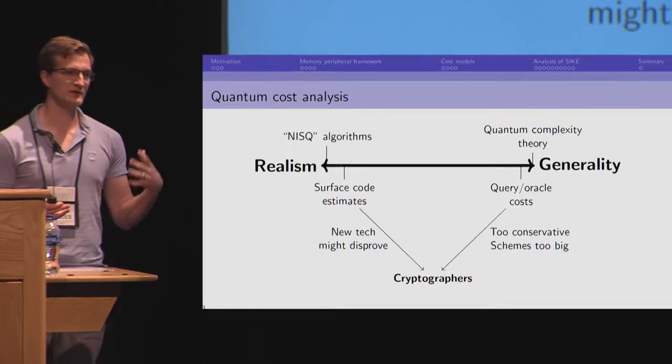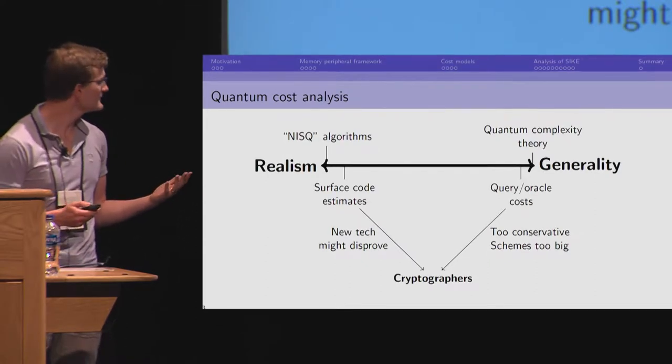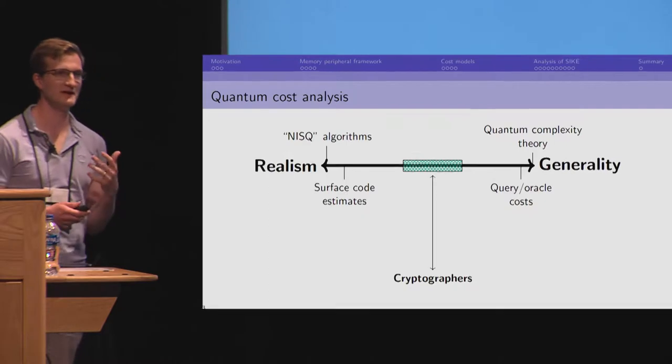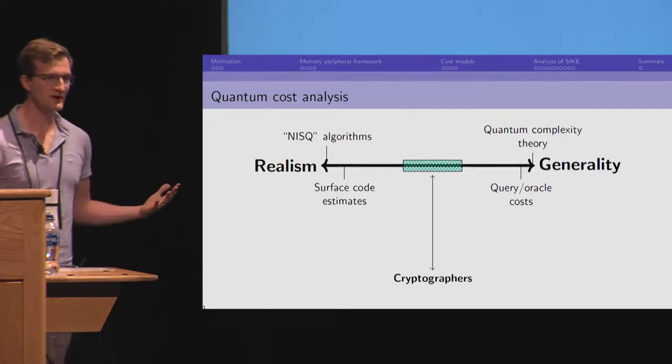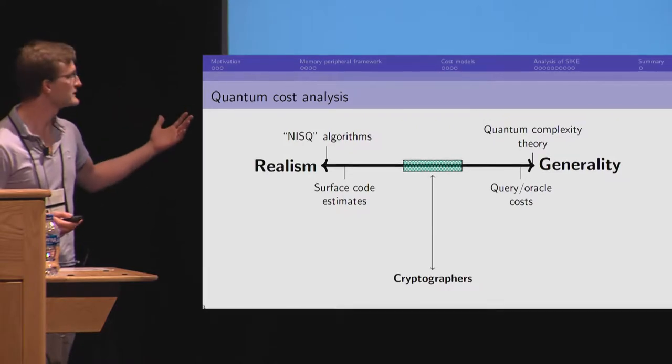But, as cryptographers, we need to worry about that because if our security was invalidated, we might have an insecure scheme. So, cryptographers need to be somewhere in the middle. And that gives the overall context for what we're going for with this work and how we tried to analyze Psyc.